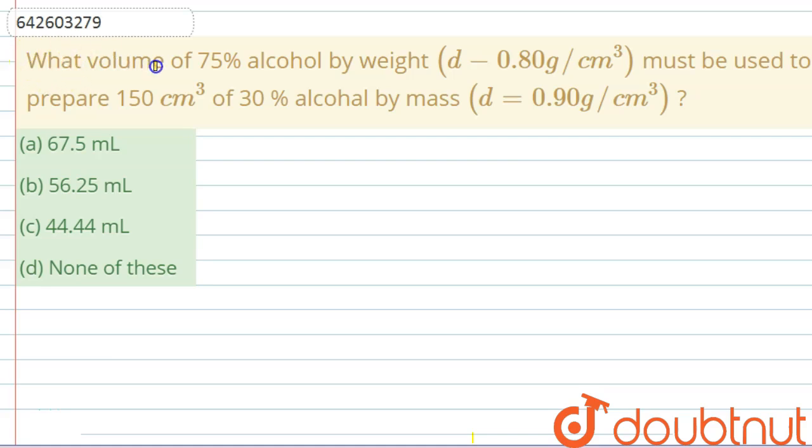What the question says: What volume of 75% alcohol by weight with a density of 0.8 g/cm³ must be used to prepare 150 cm³ of 30% alcohol by mass with the density of 0.9 g/cm³?